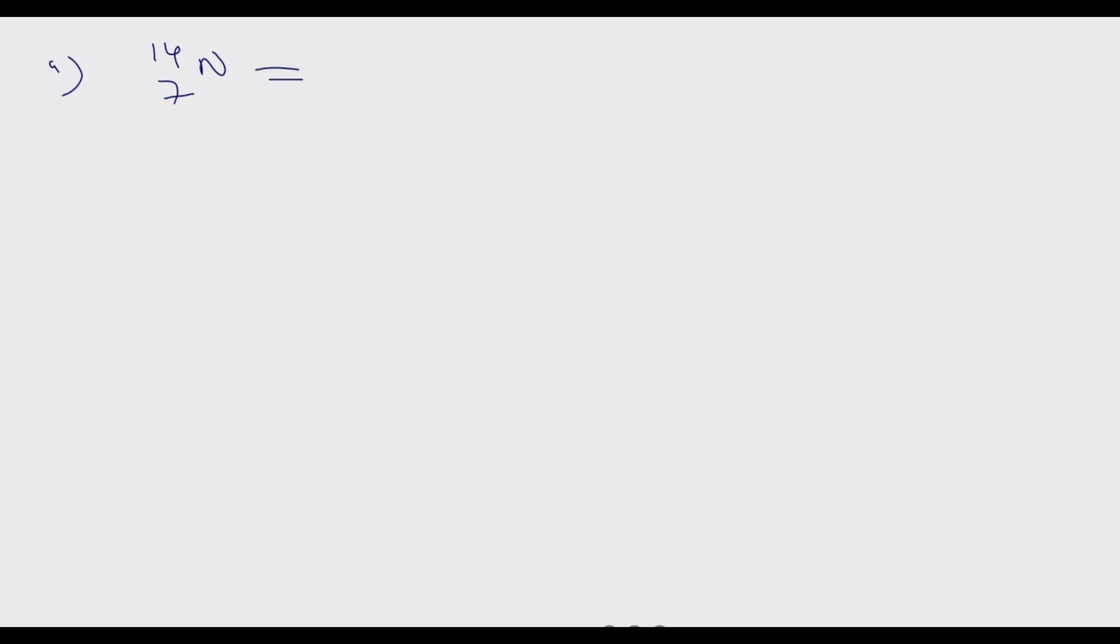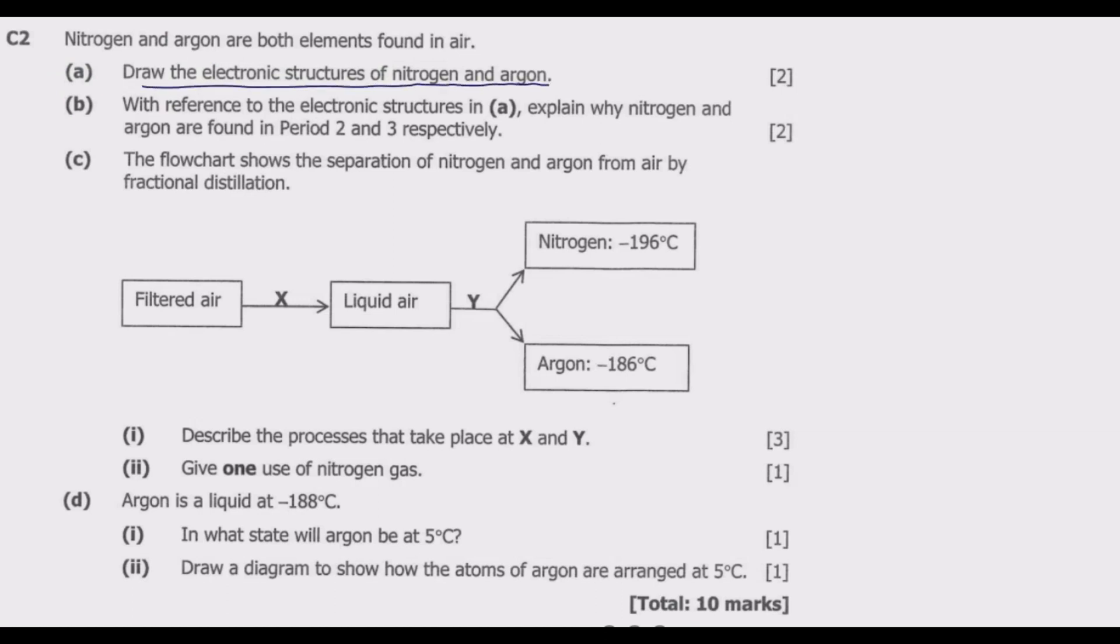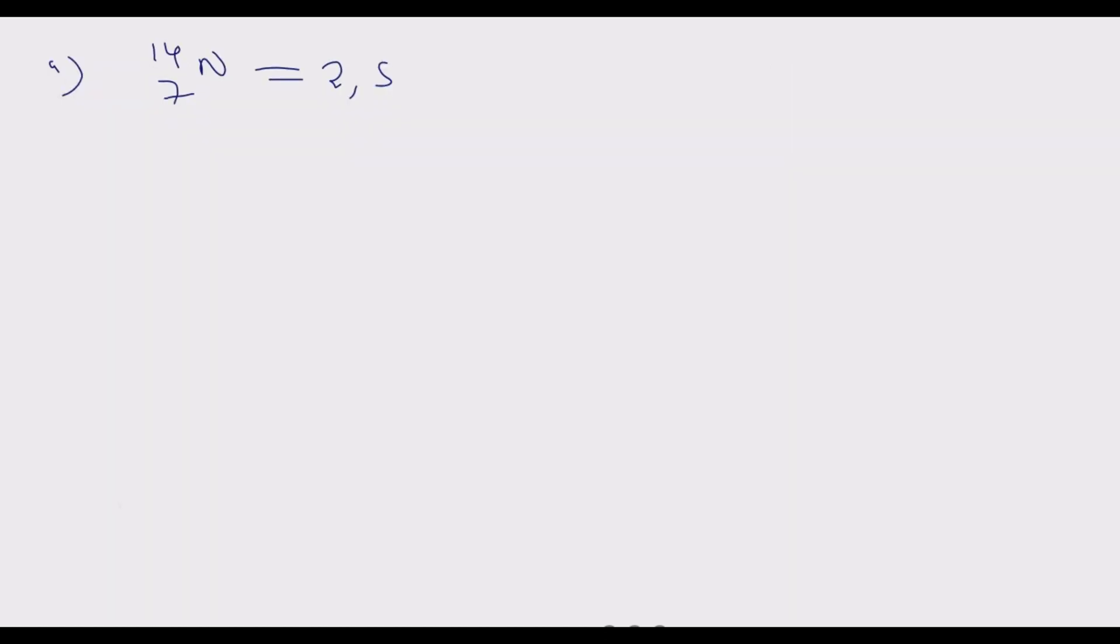If we configure these electrons in the shell, it would be 2 then 5. We draw this because the question is asking us to draw the electronic structure. So the first shell, we have 2 electrons like that. Then the next shell, we have 5. We have 5 outside and this is nitrogen.